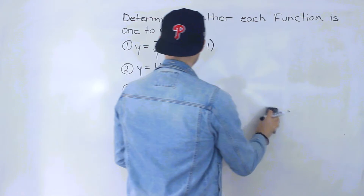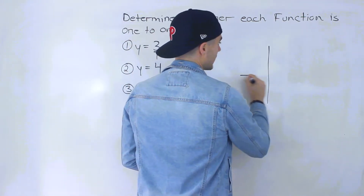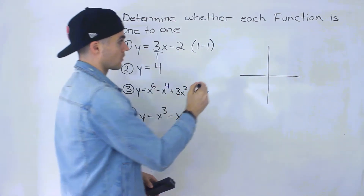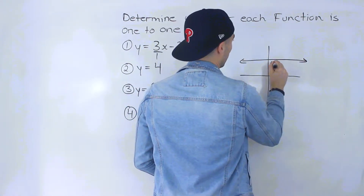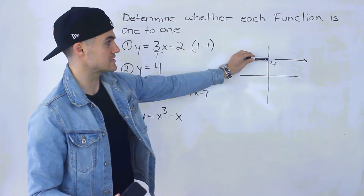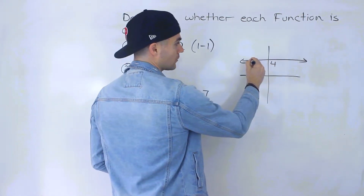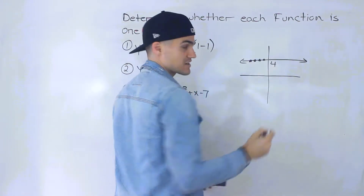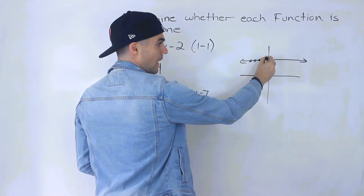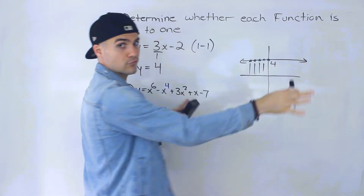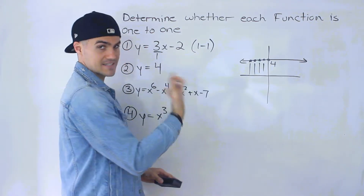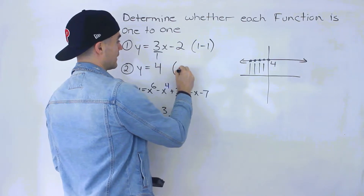Number two is y equals 4. Remember, y equals any number with no x variable is always a horizontal line. So y equals 4 is a horizontal line at y equals 4. If we run the horizontal line test through this, it fails, because at y equals 4 there are multiple x values — in fact, infinitely many. Because there are multiple x values for the same y value, it is not one-to-one.